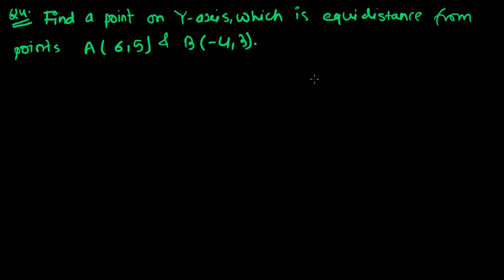Hi friend, it is another problem with the distance formula. The question is: find a point on the y-axis which is equidistant from the points A(6, 5) and B(-4, 3).